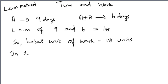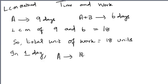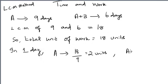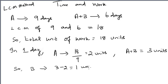As A takes 9 days, in one day A can do 18 divided by 9, equal to 2 units of work. Similarly, A and B together can do 18 divided by 6, equal to 3 units of work. So B can do (A+B) minus A, which is 3 units minus 2 units, equal to 1 unit of work per day. Therefore, the number of days taken by B to complete the entire work equals 18 units divided by 1 unit, which is 18 days.